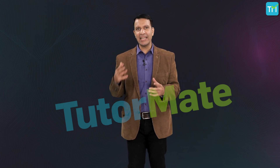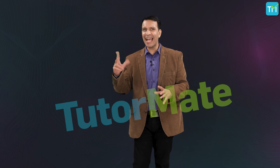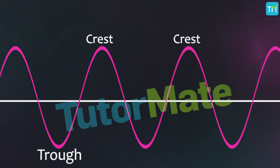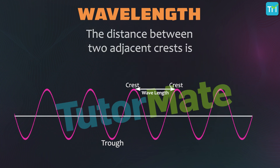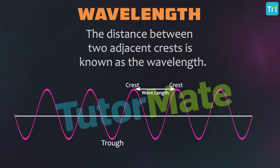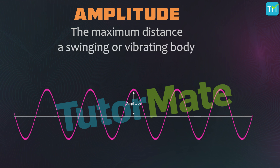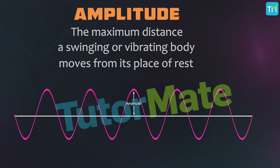What does a sound wave look like? A wave is essentially displacement along an axis. It has a highest point and a lowest point, called a crest and a trough respectively. The distance between two adjacent crests is known as a wavelength. Amplitude is the maximum distance a swinging or vibrating body moves from its place of rest, which is the axis, also known as the zero point.